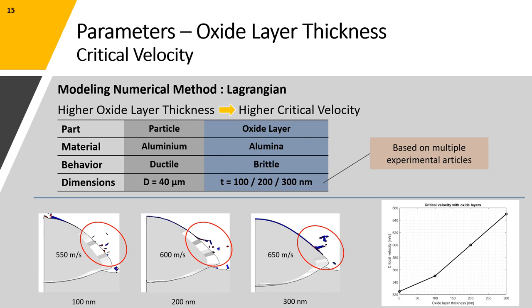However, the oxide layer is made of alumina, a brittle material in which the brittle behavior is modeled using the Johnson-Holmquist type 2 equation, which is already available in Abaqus software. For the purpose of this research and based on previous reported results, we used three different thicknesses for the oxide layer equal to 100, 200 and 300 nanometers.